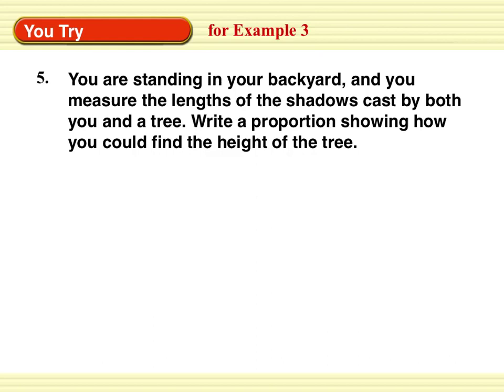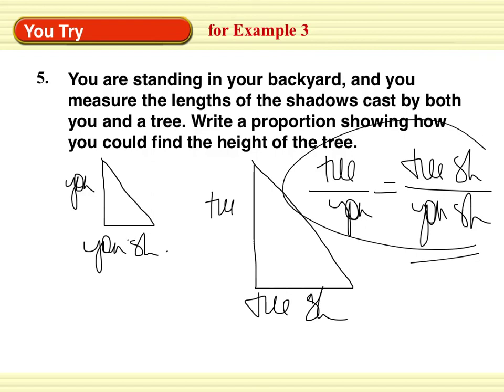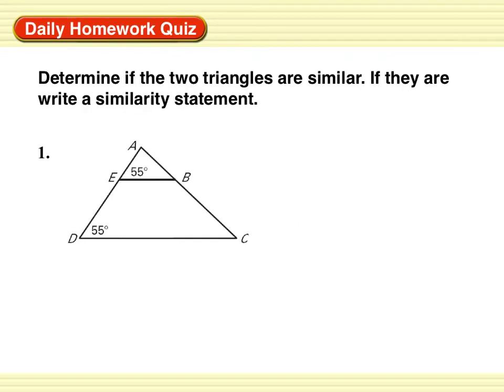You are standing in your backyard and you measure the length of the shadows cast by both you and a tree. Write a proportion showing how you could find the height of the tree. U and the shadow. And the tree. And the tree shadow. I don't know why I wrote x and y. U shadow and tree shadow. Write your proportion and then check your answer. Not rocket science on that one. You have the height of the tree over your height equals the length of the tree shadow over the length of your shadow.